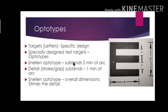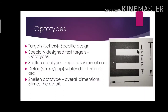Next we should know what optotypes are. The targets used in Snellen charts for measuring visual acuity — that is, the letters — should follow a specific design. These specially designed test targets are called optotypes. One Snellen optotype, meaning the whole letter, subtends 5 minutes of arc at the retina. The detail — either a stroke or a gap — subtends 1 minute of arc at the retina.